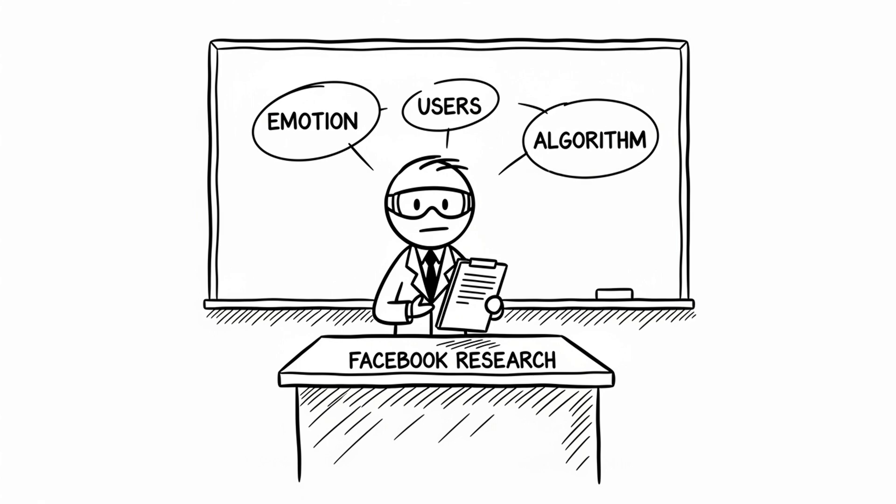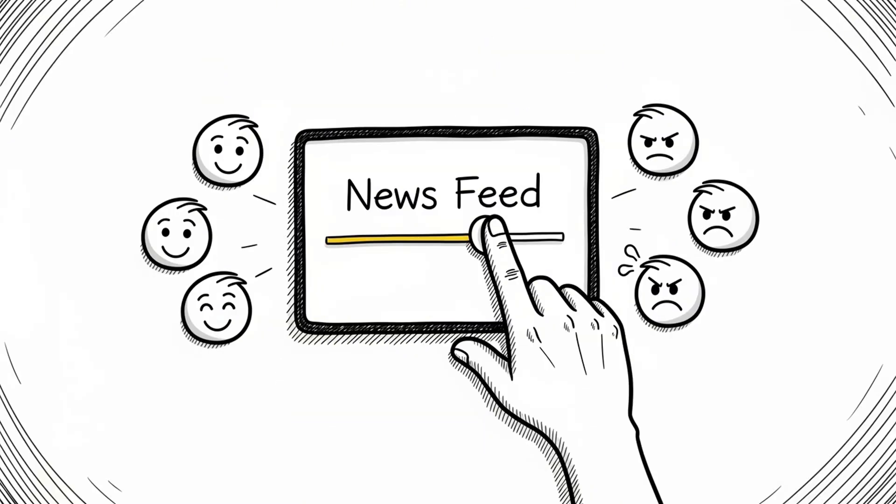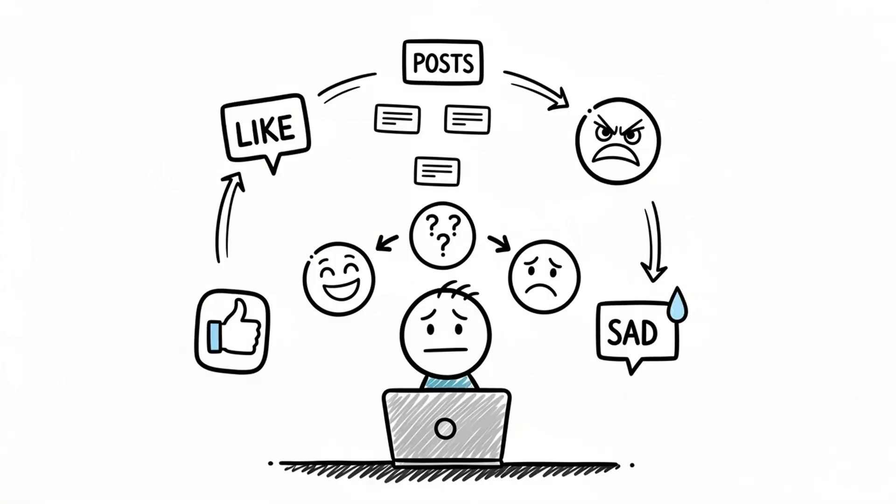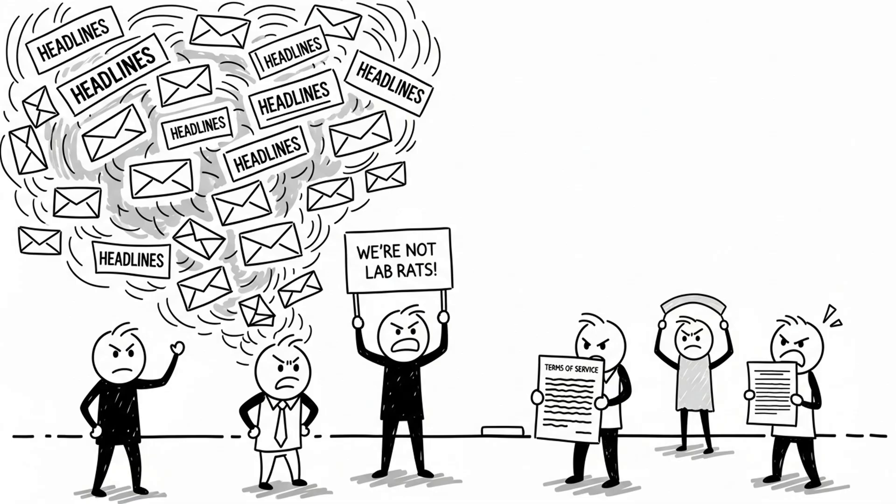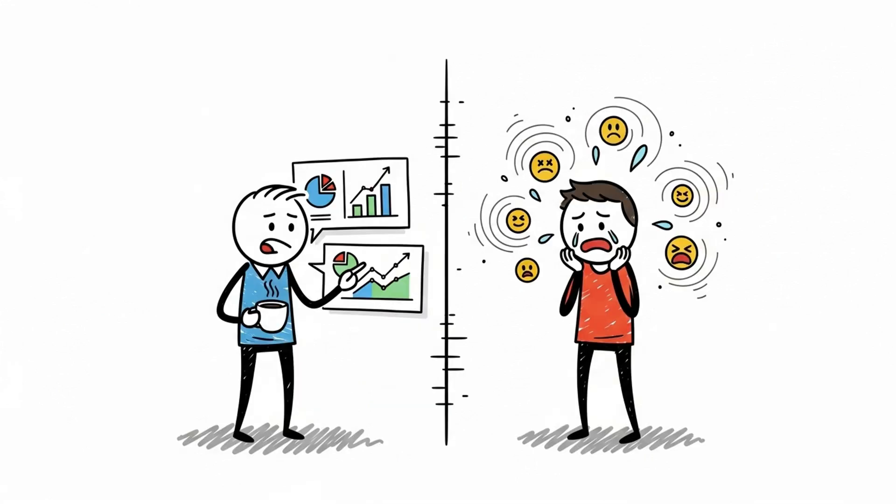In June 2014, Facebook quietly published a study. It was called Experimental Evidence of Massive Scale Emotional Contagion Through Social Networks. Catchy title. Troubling implications. Here's what they did. They tweaked the news feeds of 689,003 users. Some saw more positive posts. Others saw more negative ones. None were told. It was an experiment in emotional manipulation. The question? Would your mood shift based on what you saw? The results? Yes, users exposed to more negative posts used more negative words. Facebook had nudged human emotion. Algorithmically. The backlash came quickly. Not because of what Facebook learned, but because no one had given consent. To Facebook, it was just A-B testing. To others, it was unethical experimentation on unwitting humans.